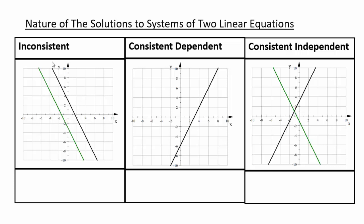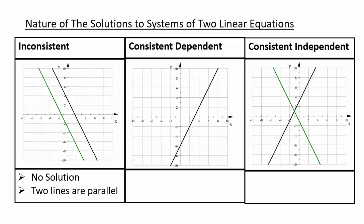When the two lines are parallel, we call the system inconsistent. When the two lines overlap — basically parallel and also having the same y-intercept — we say they are consistent dependent. When the two lines intersect uniquely in one point, the system is consistent independent. When you have an inconsistent system, you have no solutions and the two lines are parallel. When you have a consistent dependent system, you have infinitely many solutions and the two lines overlap — infinitely many because all the points on that line are solutions.